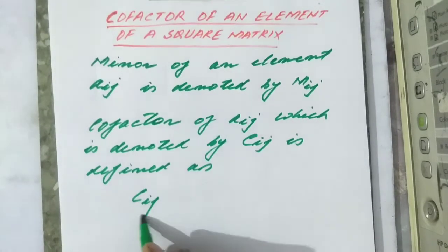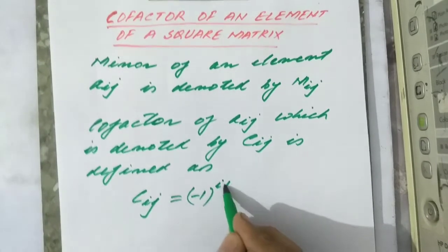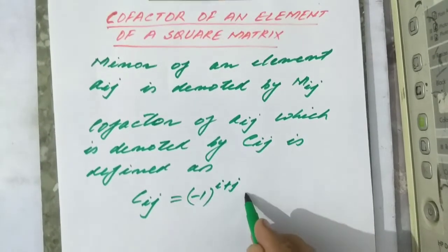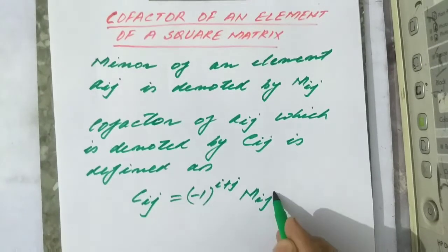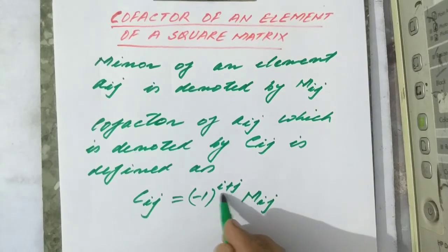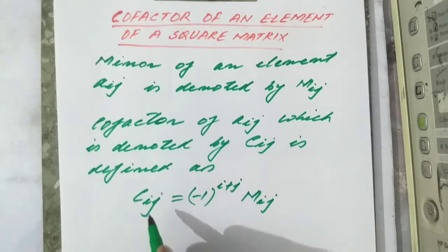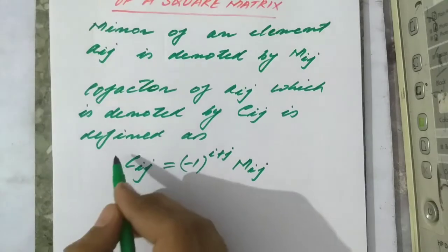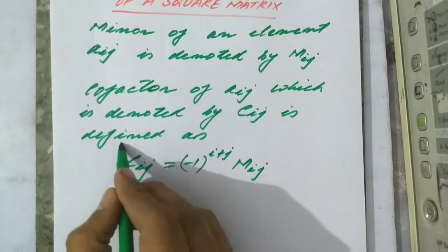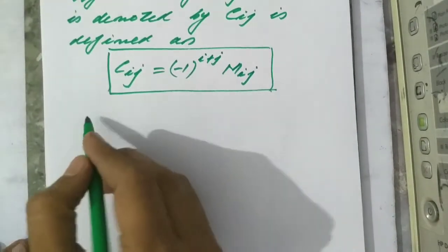The cofactor of aij, denoted by cij, is defined as: cij = (−1)^(i+j) · mij. So if we multiply a minor by (−1) raised to the power of the sum of the row and column orders of the element, we get the cofactor.